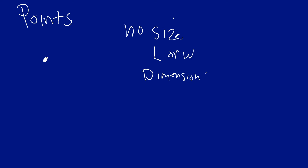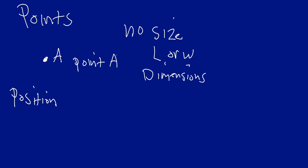This will become more important later. A point also only has position — so for example if you're graphing something, you might say point (3, 4); that's a position. A point has position but no dimensions; it doesn't really take up space. When we label a point, we give it a capital letter, so placing an 'A' next to it makes it point A.